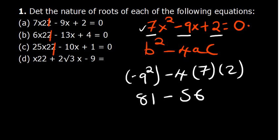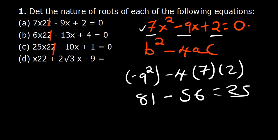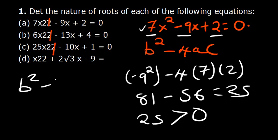So we have 81 minus 4 times 7 times 2. That is 81 minus 56, which equals 25. Since 25 is greater than 0, our discriminant is greater than 0. We conclude that the roots are real and distinct. Furthermore, the square root of 25 is a perfect square giving 5, so the roots are also rational — expressible as fractions.